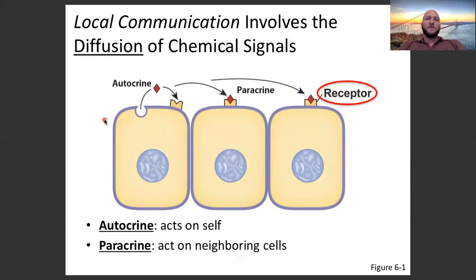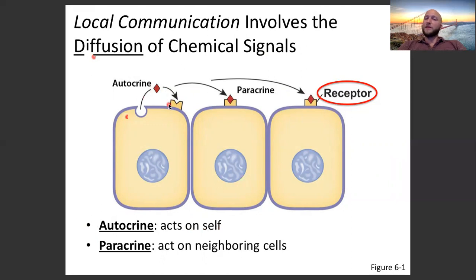Local communication involves the diffusion of chemicals. A cell releases a chemical that diffuses into the local area and binds to a receptor on itself or on a neighboring cell. Autocrines act on the cell itself — released into the interstitial area and binding back on the same cell. Paracrines act on neighboring cells, diffusing into the local area, the same neighborhood.